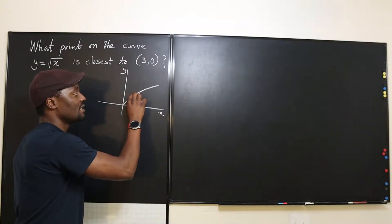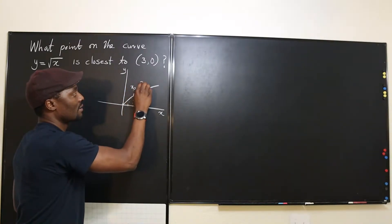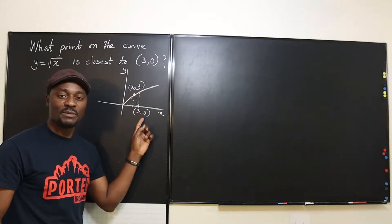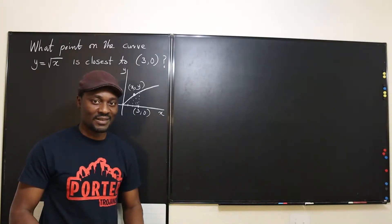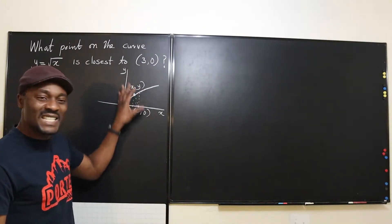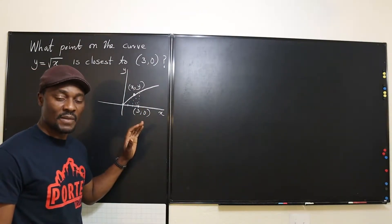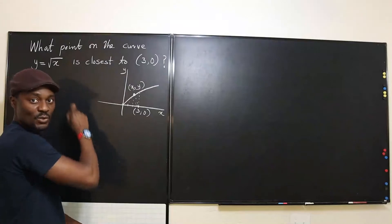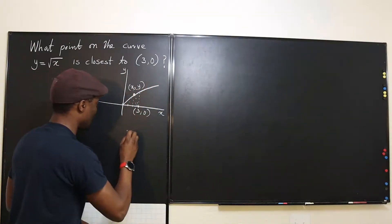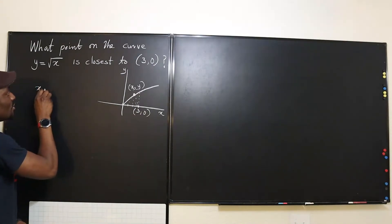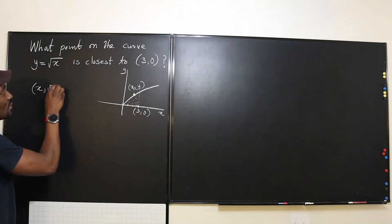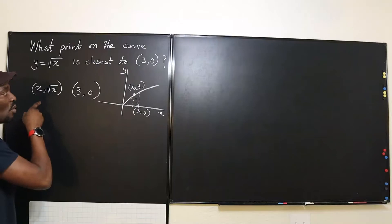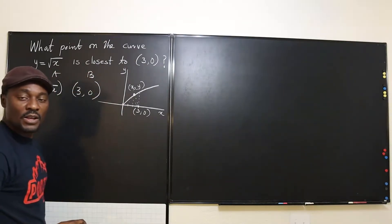Whatever that point is, its coordinates will be (x, y), and the given point is (3, 0). We want to find the minimum distance between these two points. Since y = √x, we can rewrite the point on the curve as (x, √x), and find the distance between (x, √x) and (3, 0).